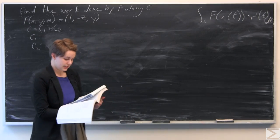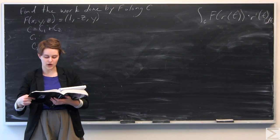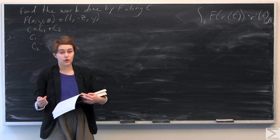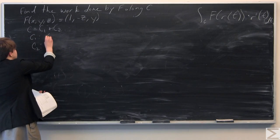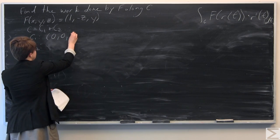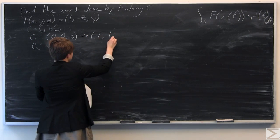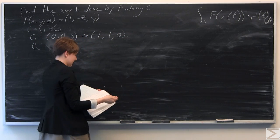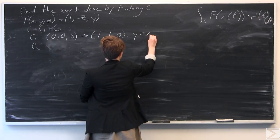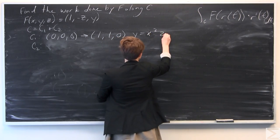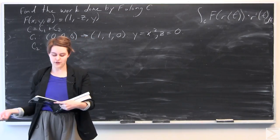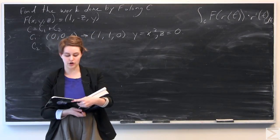C1 is the portion of the parabola where Y equals X squared and Z equals 0, going from (0, 0, 0) to (1, 1, 0). So we have the parabola Y equals X squared with Z equal to 0 as our first curve.